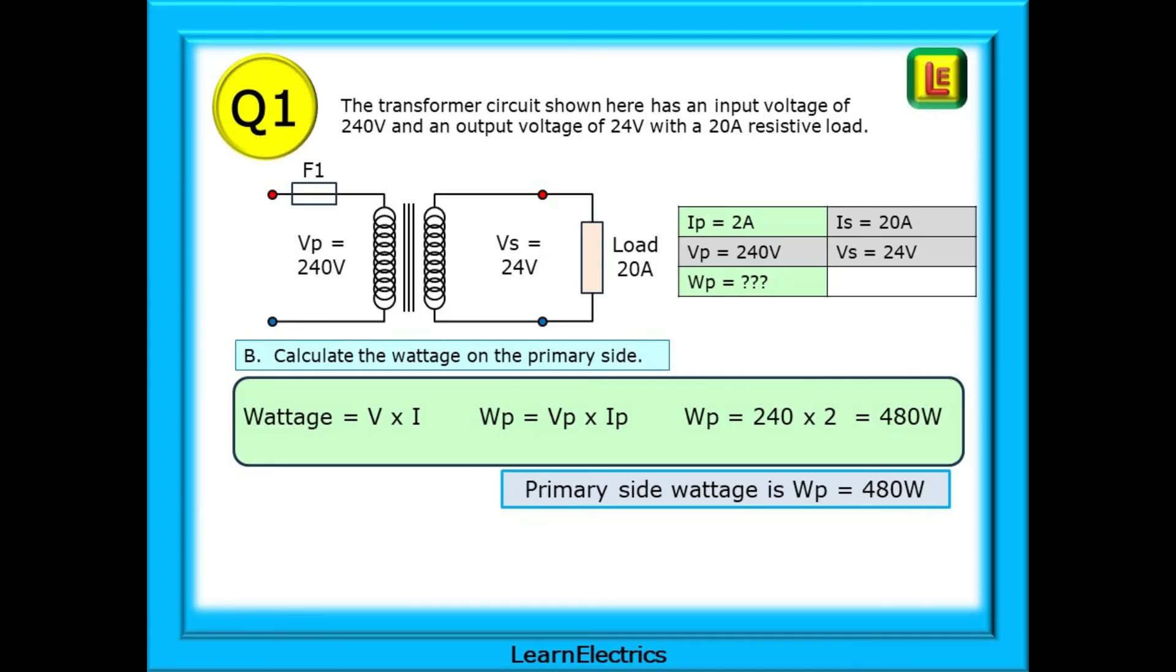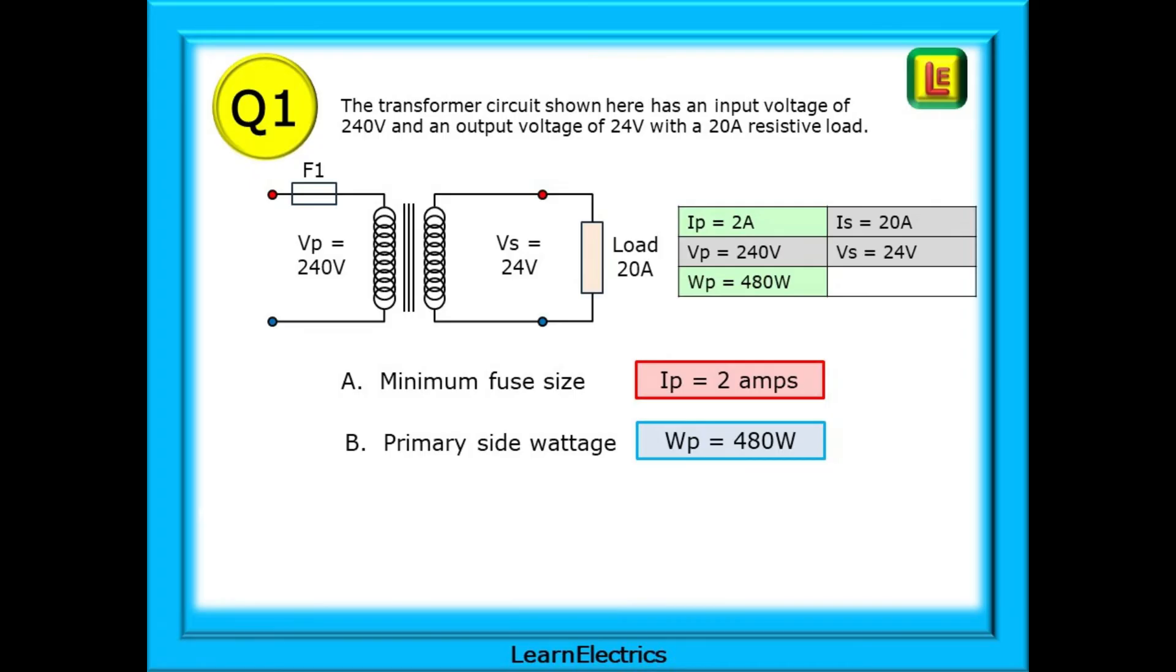Again, we are dealing with a perfect transformer without losses. So WP will always equal WS. We have a primary voltage given to us as 240 volts and we've just calculated the primary current IP as 2 amps. 240 multiplied by 2 is 480 watts for the power drawn by the primary side.